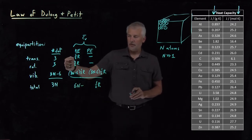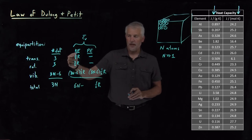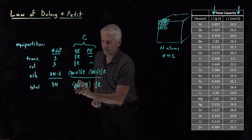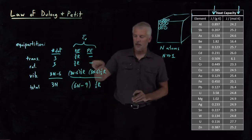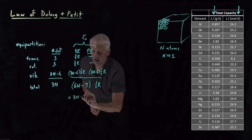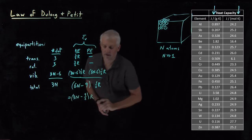6N minus 12 plus these two factors of three halves that add up to 3. So my 6N minus 12 becomes 6N minus 9. If I add up all those factors of one half R, so that's the same as 3N minus nine halves factors of R.